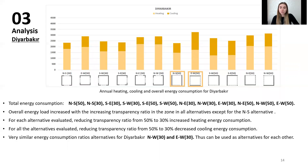For Diyarbakır, the alternatives are listed from lowest to highest. The lowest energy consumption alternative is the north-south 50% alternative and the highest is the east-west 50% alternative. Overall energy load increases with increasing transparency ratio for all alternatives except the north-south alternative. Reducing transparency ratio from 50% to 30% increased heating energy consumption but decreased cooling energy consumption. The north-west 30% and east-west 30% alternatives for Diyarbakır have very similar energy consumption and can be used as alternatives for each other.